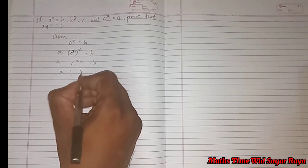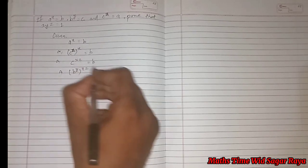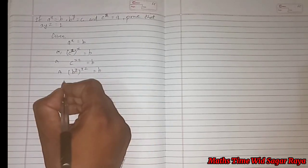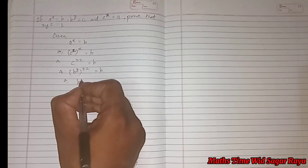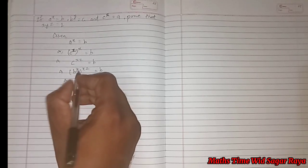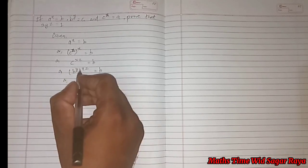So instead of c we can write b power y. Here b power y into xz will be xyz. When the powers are in multiplication we have to multiply, so here we have to multiply.